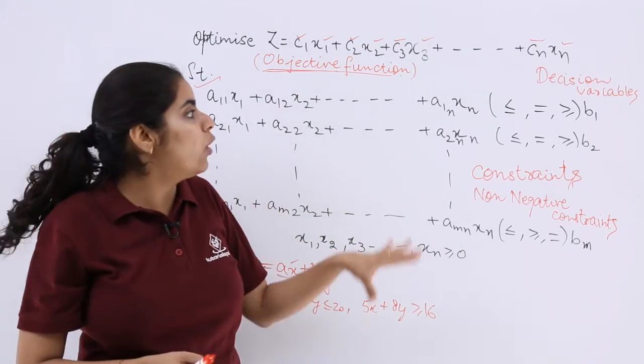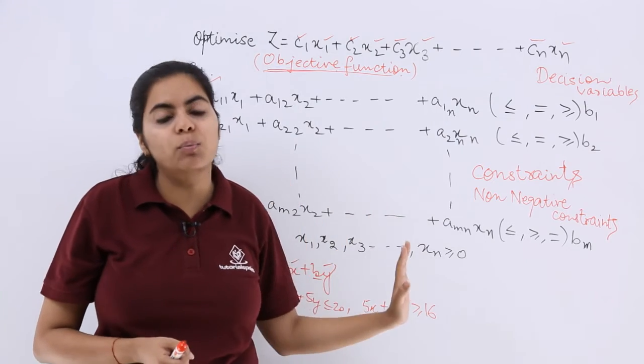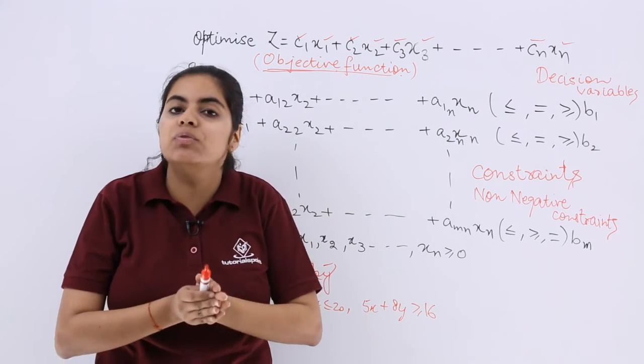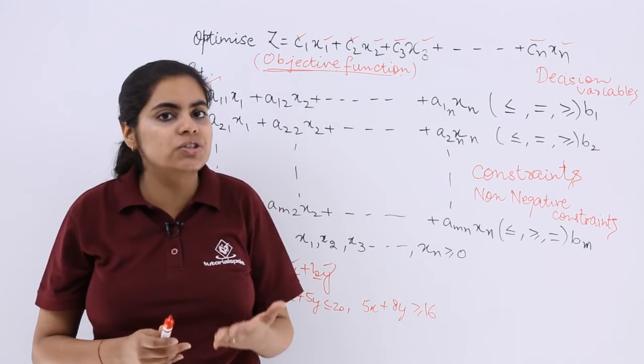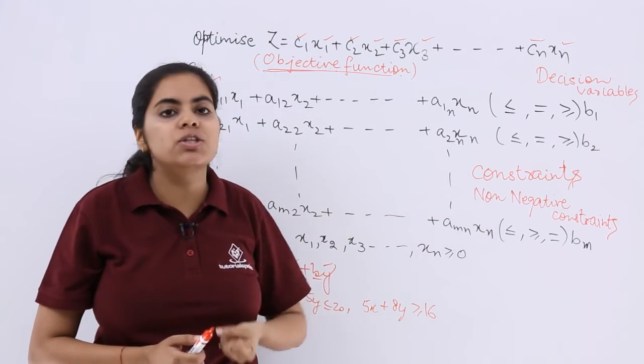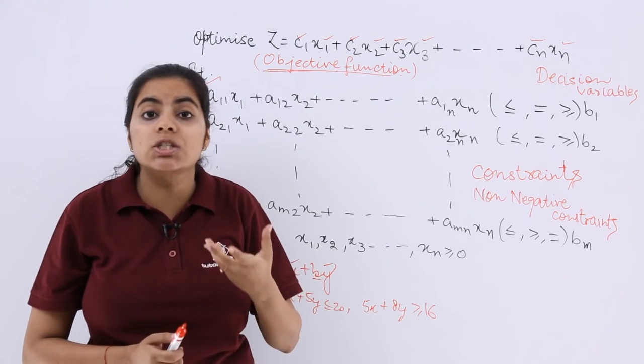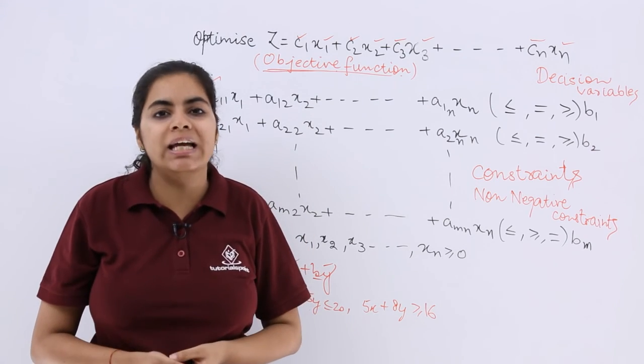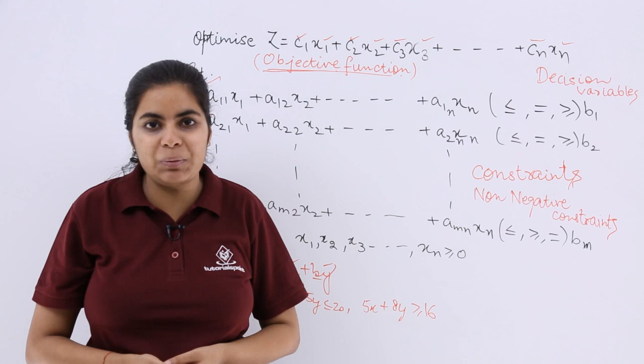So this is how a general mathematical formulation would look like. With the help of this and the terminologies that we started—like objective function, non-negative constraints, your constraints, your decision variables—let's move further in this world of linear programming.